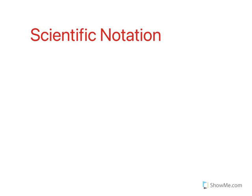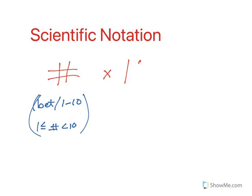Alright, so scientific notation, first of all, is we're going to start with a number, and this number is going to be between 1 and 10. Okay, so sometimes you're going to see that number as being greater than or equal to 1, but less than 10. And then we're going to multiply that by 10 to some power.